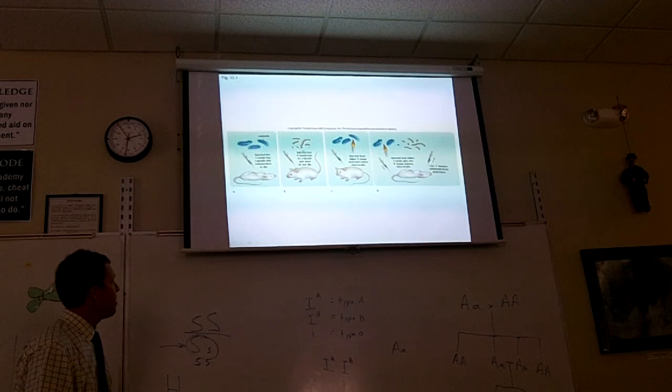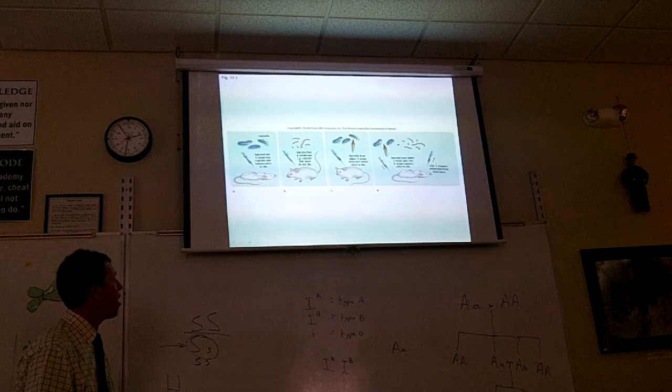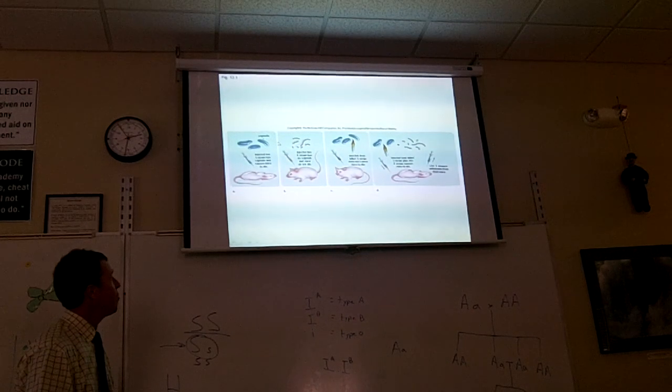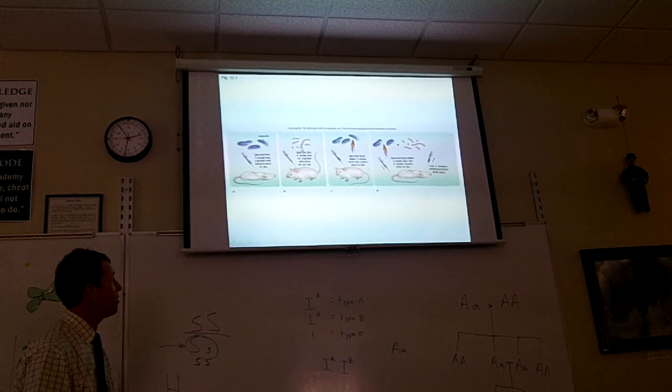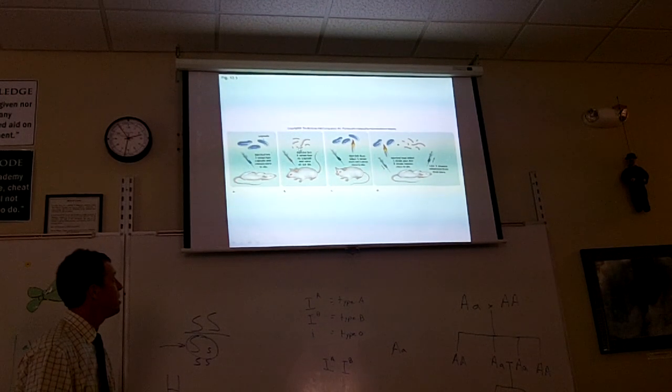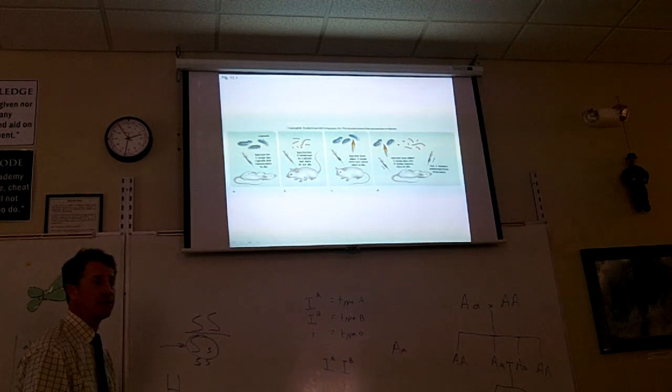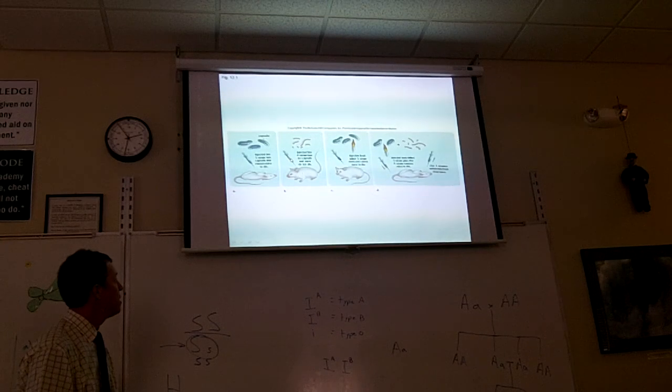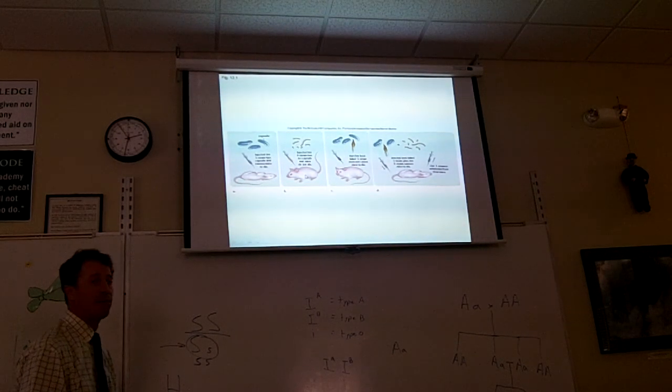He had another strain of the same bacteria, only these bacteria were called R-strain. R means rough. They don't produce the capsule. So they look rough under the microscope because they don't have a smooth capsule around them. You inject R-strain bacteria into the mice and the mice don't die.